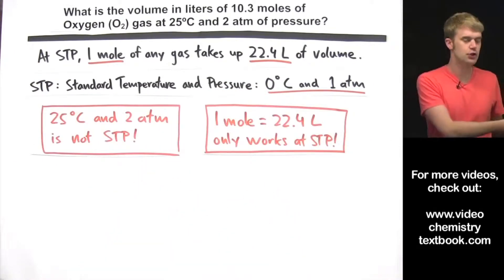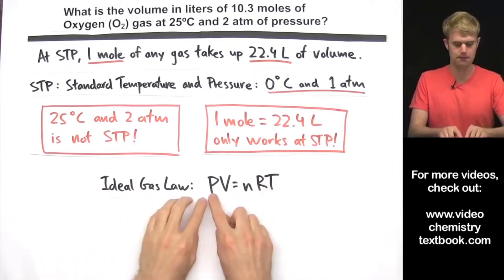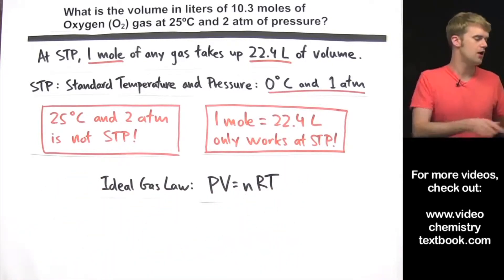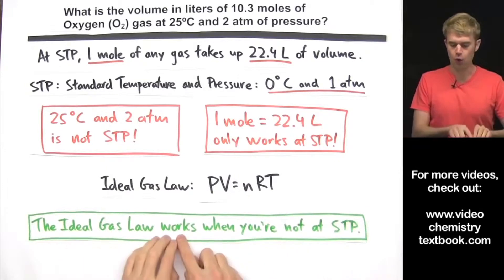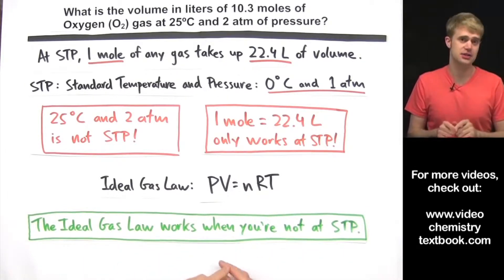If you had to solve a problem like this, you'd want to use the ideal gas law, PV equals NRT, because the ideal gas law works when you're not at STP. I've got a whole bunch of videos on the ideal gas law, check those out if you want to learn more.